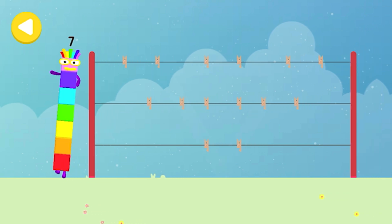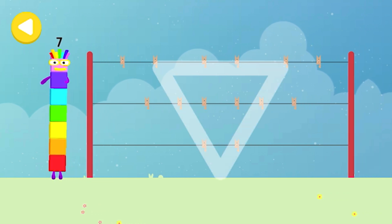Can you help number block 7 hang out his pants to dry on his way home? Trace the line and help the number block get home safely.